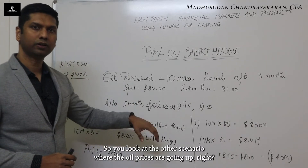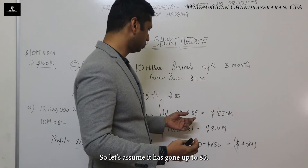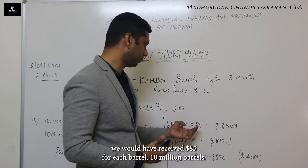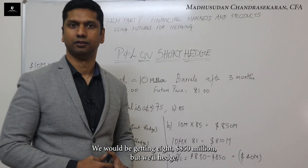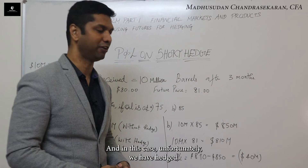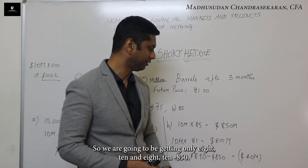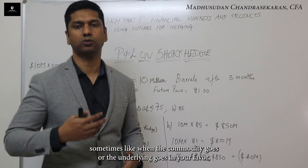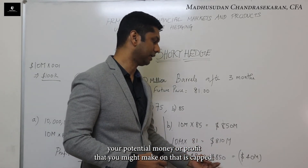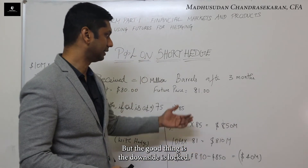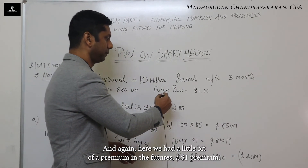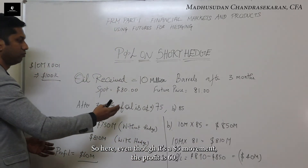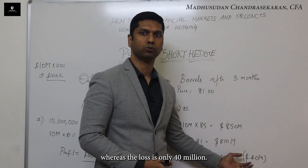Now let's look at the scenario where oil has gone up to $85 — against our expectation. In the market without the hedge, we would have received $85 per barrel, or $850 million for 10 million barrels. But we have hedged, so unfortunately we are only going to be getting $810 million. That's $810M minus $850M — we are losing $40 million relative to the unhedged position. That is the downside sometimes: when the underlying moves in your favor, your potential profit is capped. But the good thing is the downside is locked. Note that the $1 premium in the futures cushions the impact, so the profit on the downside scenario is $60 million while the loss on the upside scenario is only $40 million.